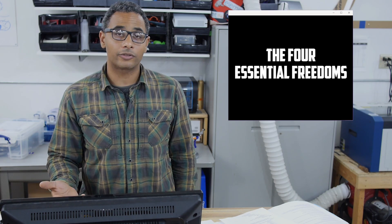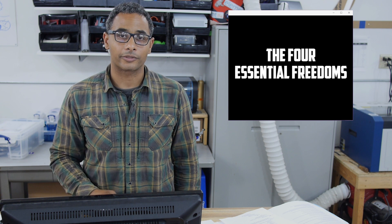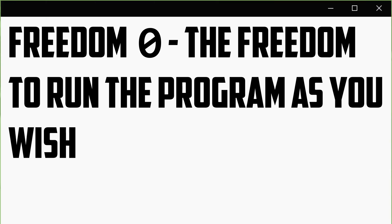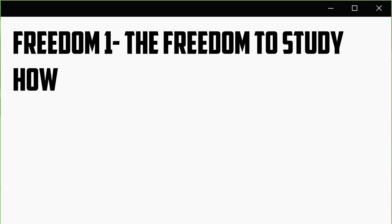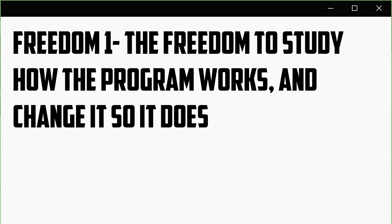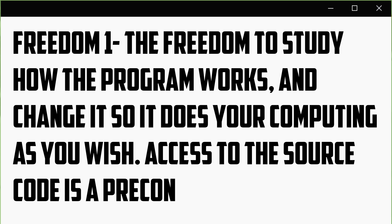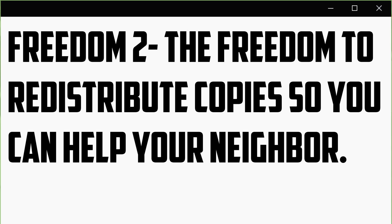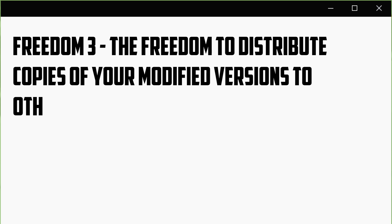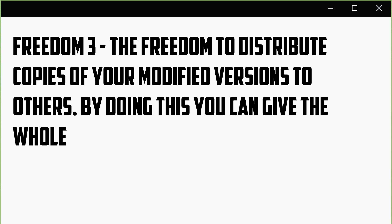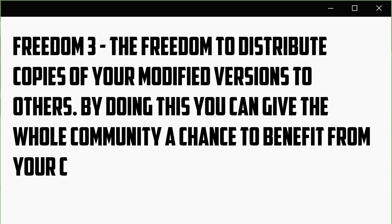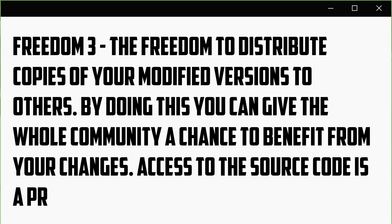The GNU project has four essential freedoms. Freedom zero: the freedom to run the program as you wish, for any purpose. Freedom one: the freedom to study how the program works and change it so it does your computing as you wish — access to the source code is a precondition for this. Freedom two: the freedom to redistribute copies so you can help your neighbor. Freedom three: the freedom to distribute copies of your modified versions to others — by doing this you can give the whole community a chance to benefit from your changes.